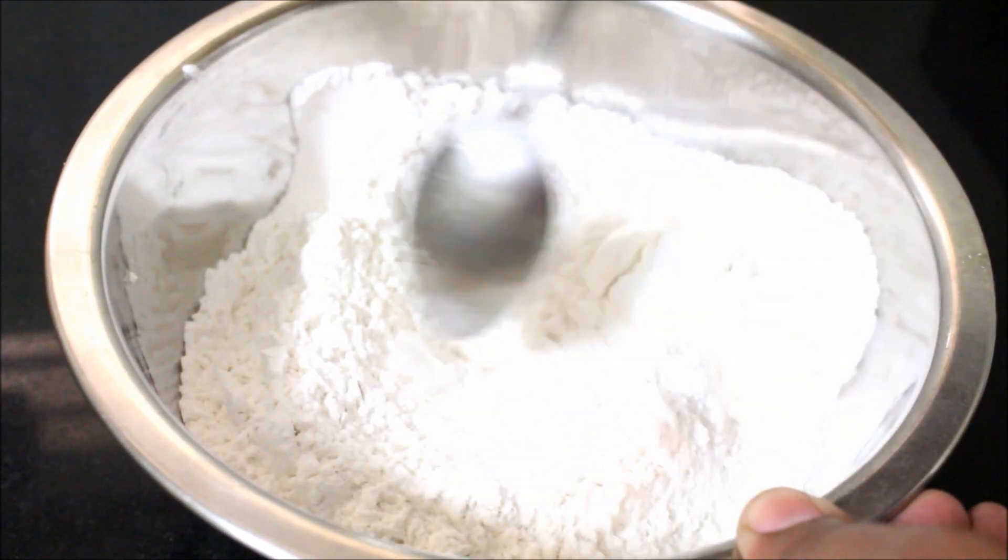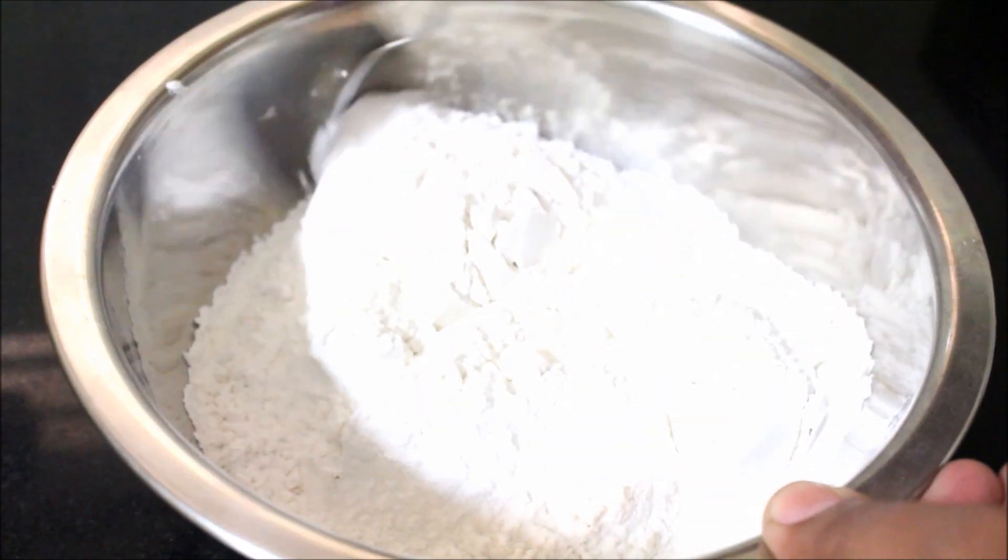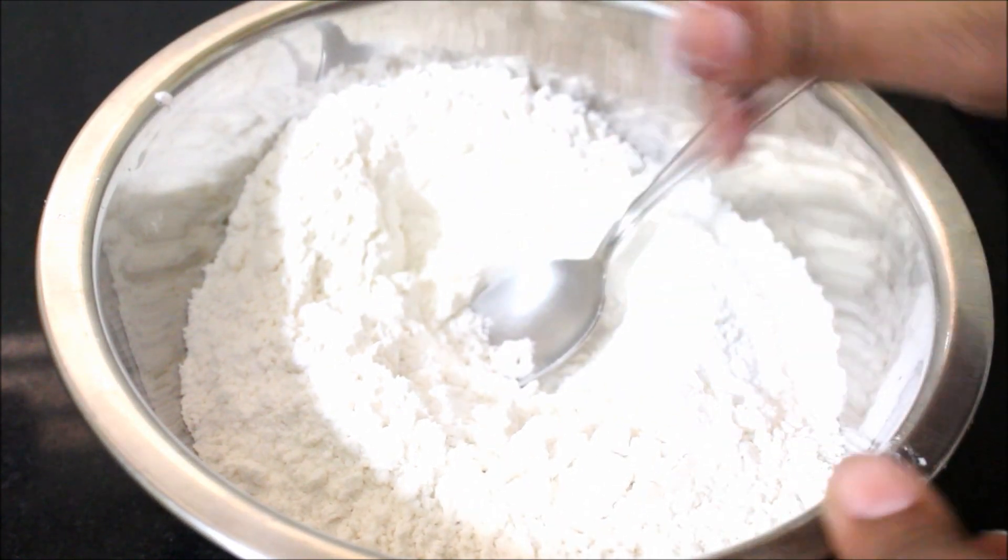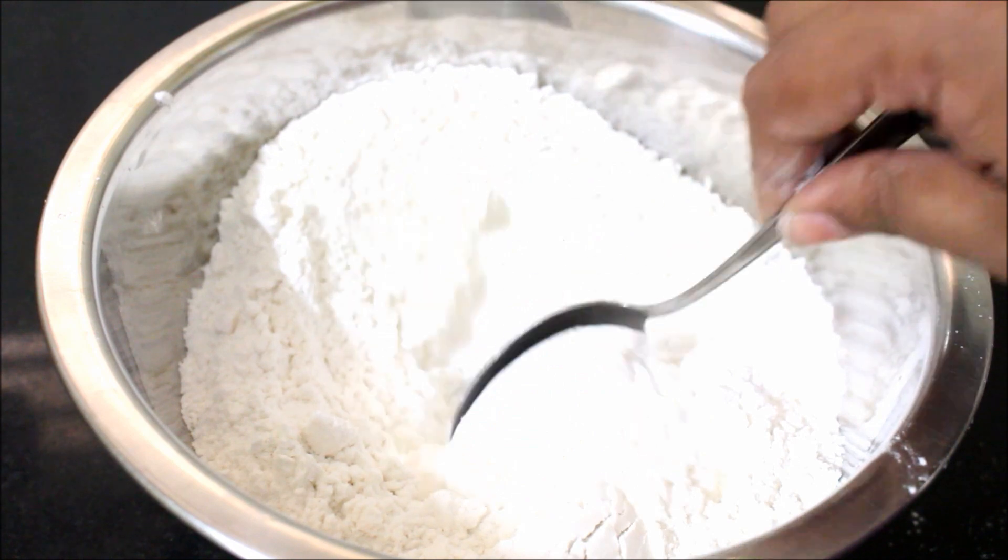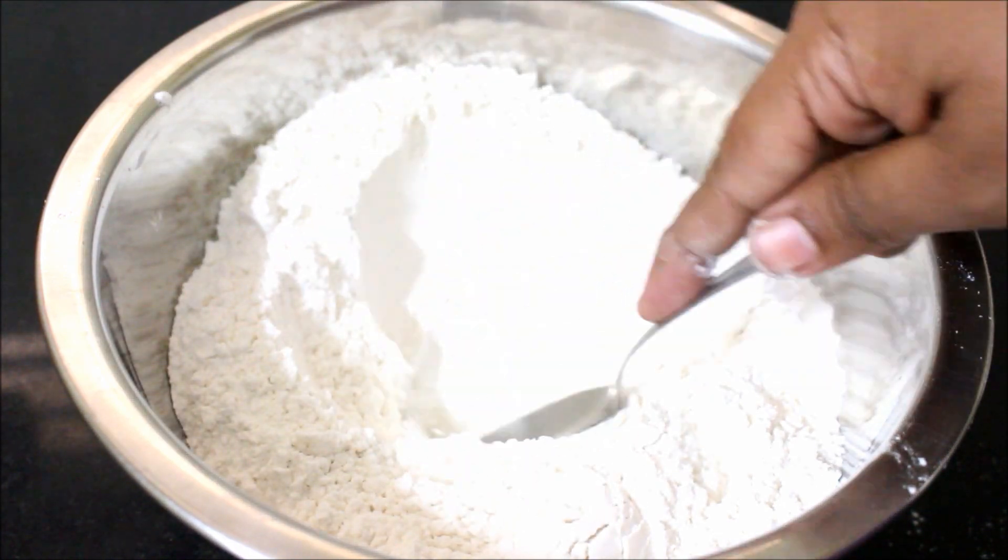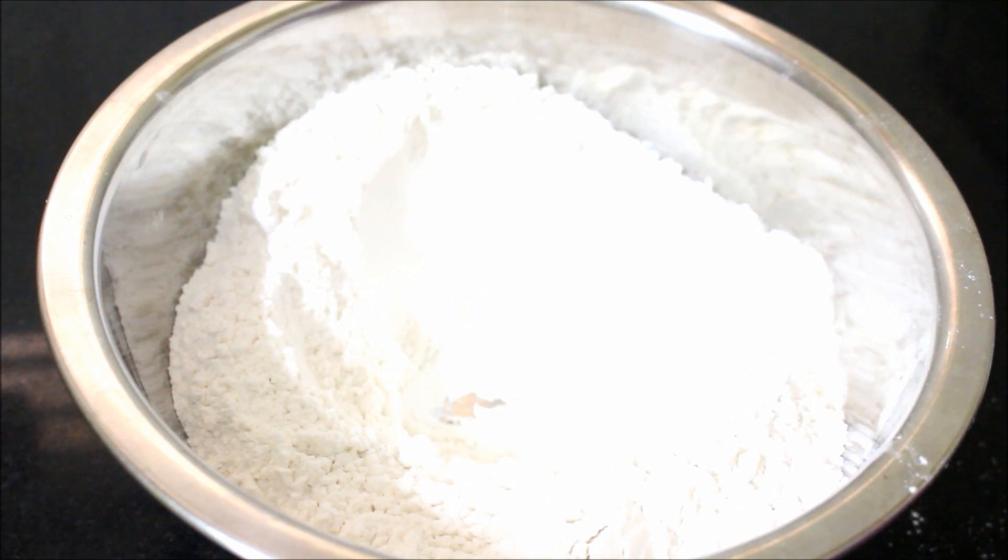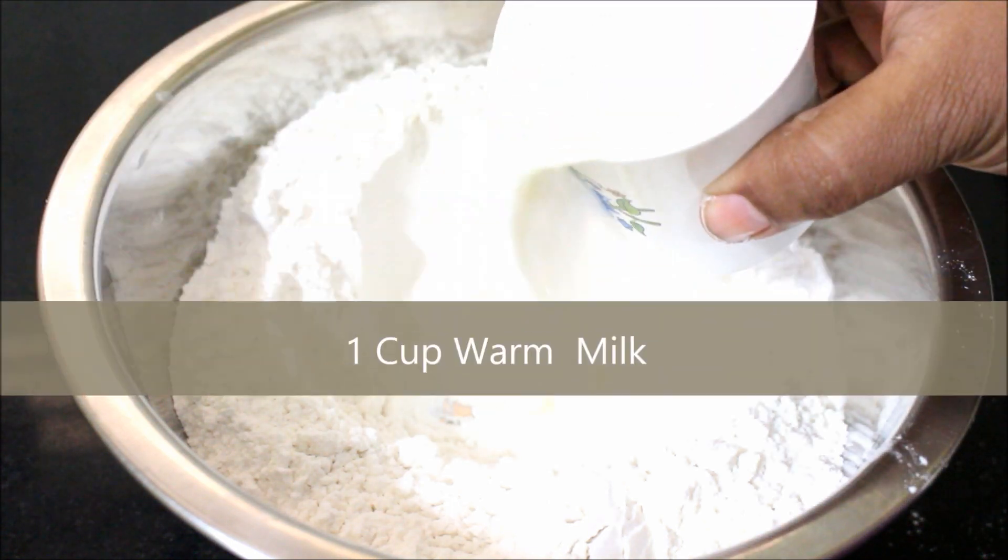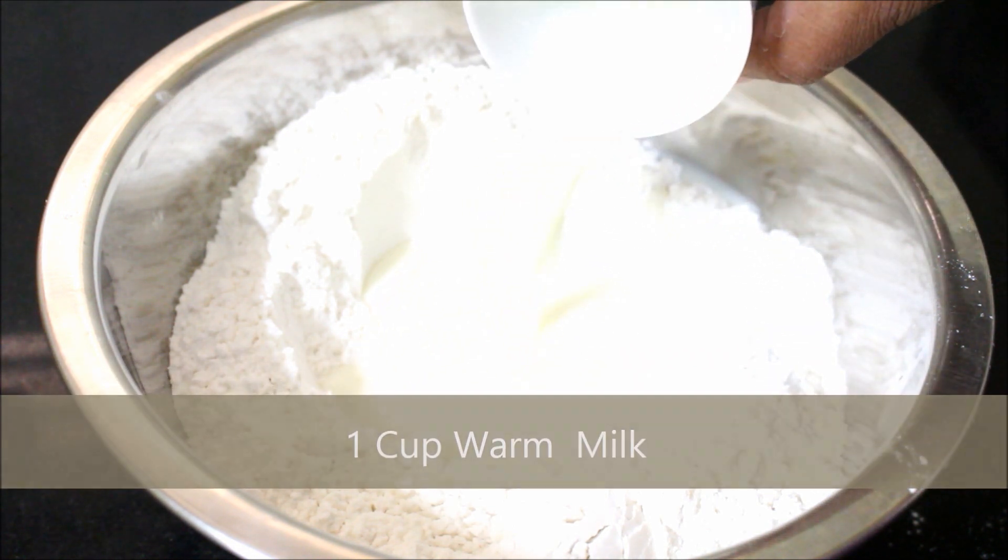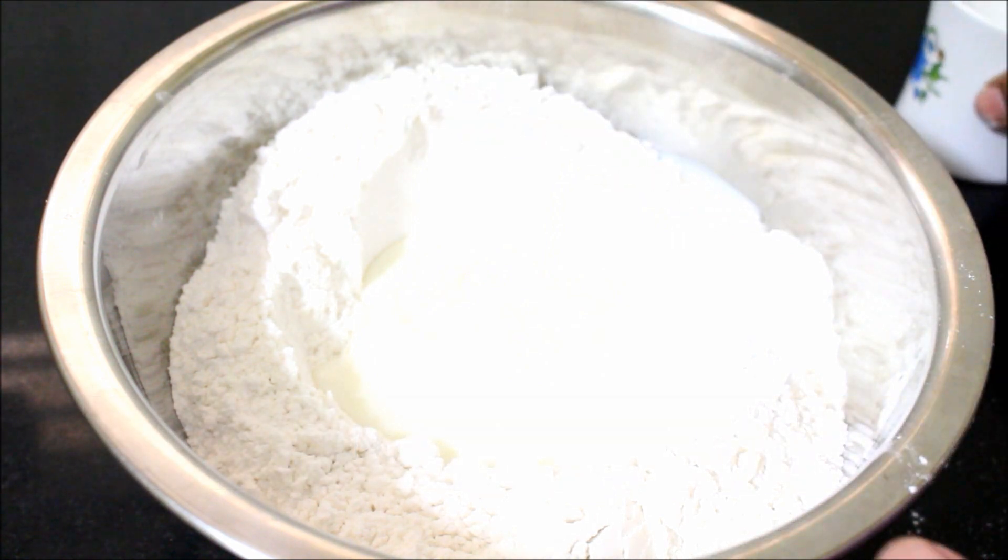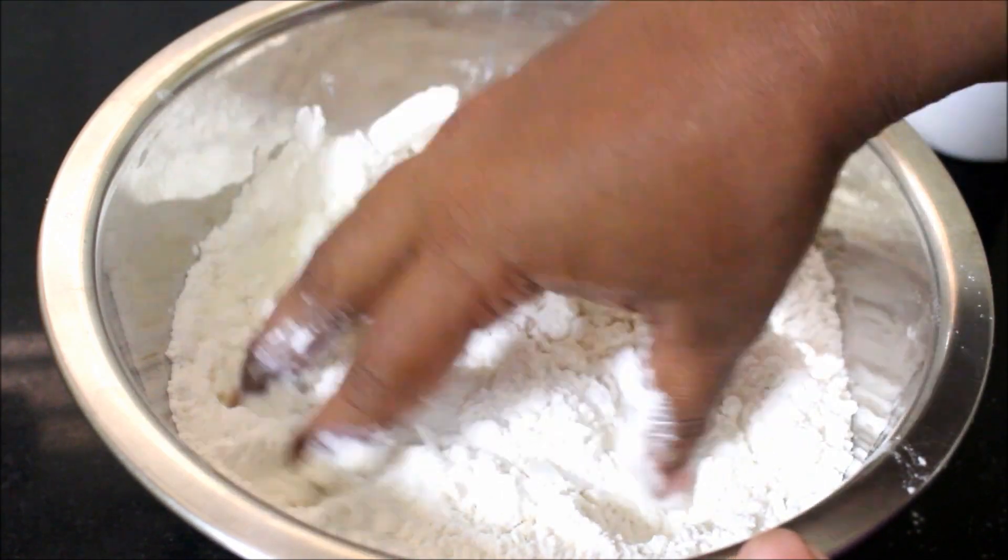The main ingredient that we need to add is milk. Milk should be nice and warm. We should not add water at any given point. We should add only milk to prepare this Romali Roti dough. I'm adding warm milk little by little. I'll give this a good mix and form a dough, a chapati dough consistency.